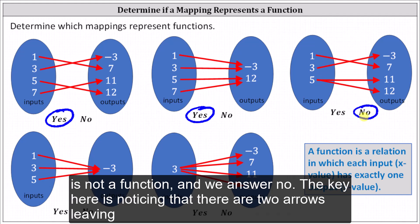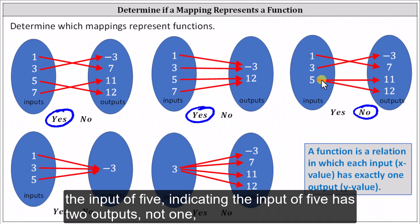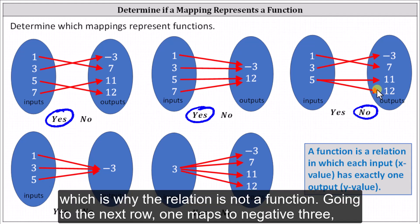The key here is noticing that there are two arrows leaving the input of five, indicating the input of five has two outputs, not one, which is why the relation is not a function.